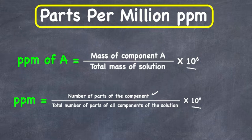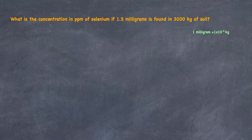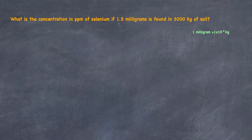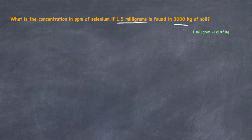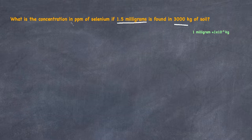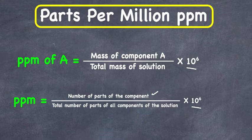Let's go over a couple of examples to understand the concept. In this example, we're going to find the concentration in PPM of selenium if 1.5 milligrams — a very very small amount — is found in 3,000 kilograms of soil. Compared to 3,000 kilograms of soil, this selenium is a very small amount, so we calculate the concentration in PPM.